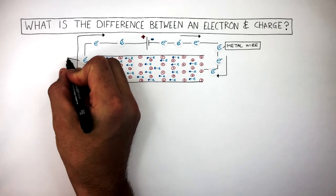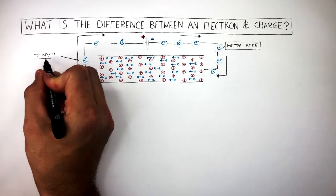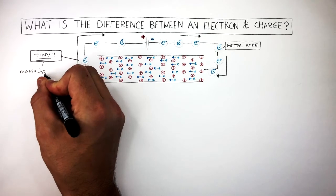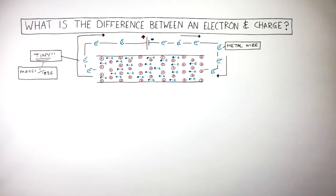Now it must be understood that these electrons are tiny. Each electron has a mass of 1 over 1,836. Their mass is so small, we consider their mass to be negligible.